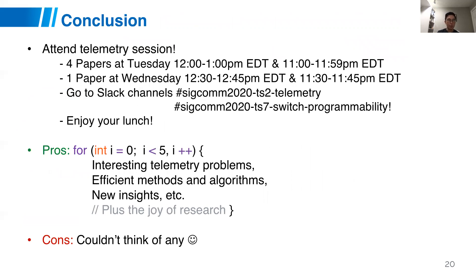Let me conclude. Please attend the telemetry session — there will be four papers on Tuesday and one paper on Wednesday in a separate session. Please join the Slack channels, ask questions, and participate in the Q&A. If you see the pros and cons of attending these talks, I think there will be interesting telemetry problems, interesting methods and algorithms, and new insights. In terms of cons, I couldn't think of any. Please enjoy, and if you have any questions, please leave them on Slack. Thank you so much.